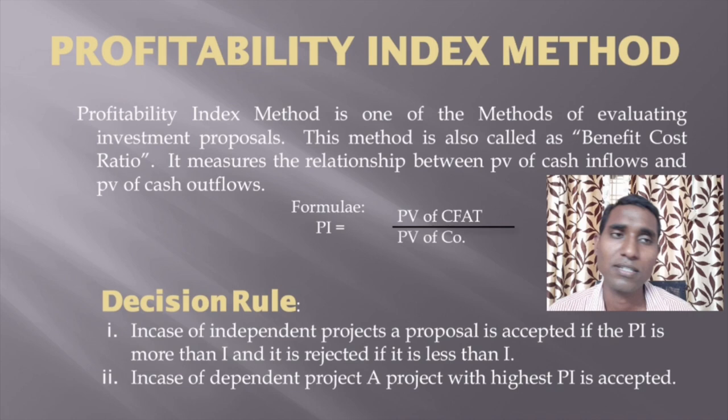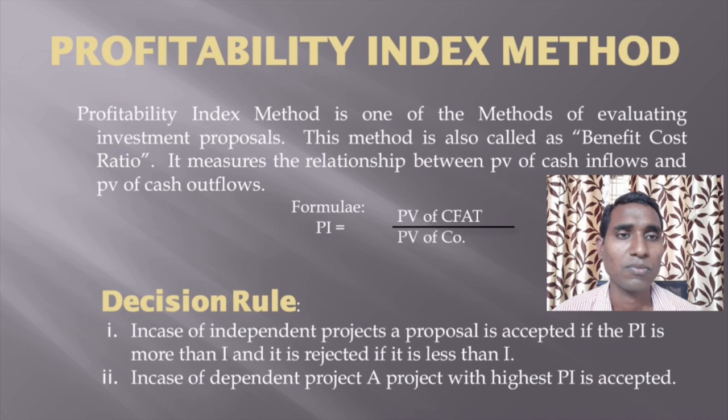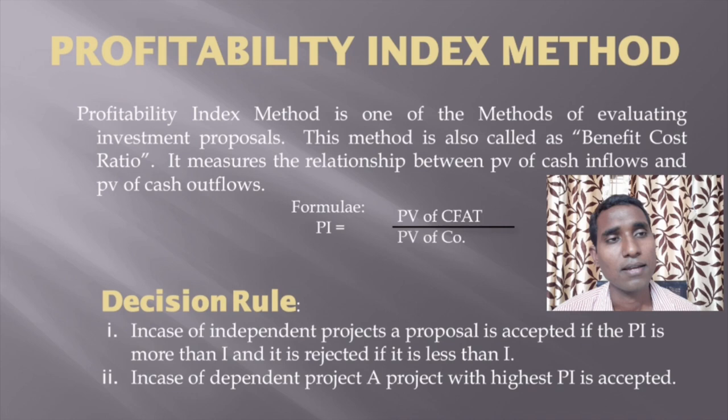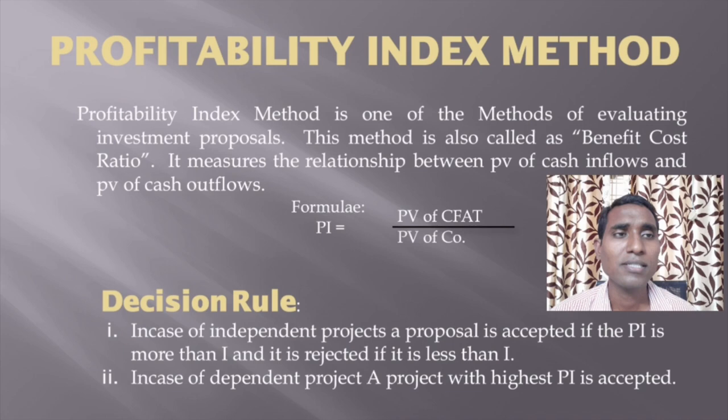Let us see the decision rule. We have two decision rules: in case of independent projects and in case of dependent projects. In case of independent projects, a proposal is accepted if the calculated PI is more than one, and it is rejected if it is less than one. In case of dependent projects, a project with the highest PI is accepted. So if you are evaluating two or more projects, you need to accept the project whose PI is higher.